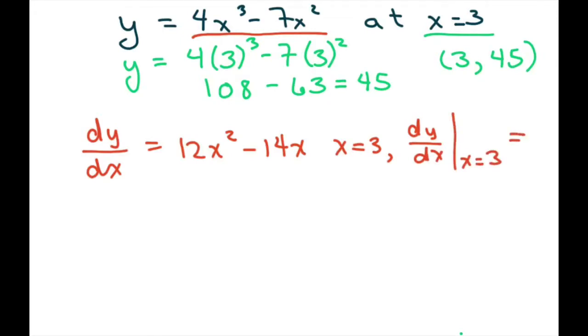So this equals 12 times 3 squared minus 14 times 3, which equals 66.